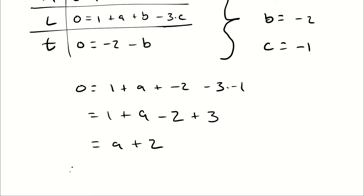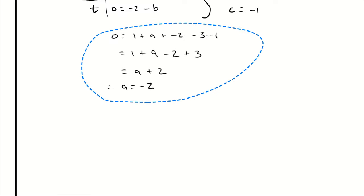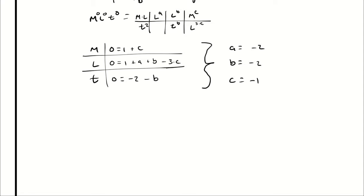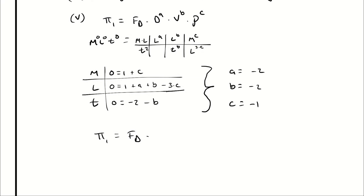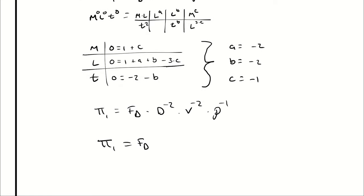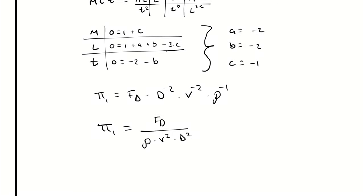Therefore A = −2. Pi group one can be written as drag force multiplied by diameter to the negative two, velocity to the negative two, and density to the negative one — or equivalently, drag force divided by density times velocity squared times diameter squared.